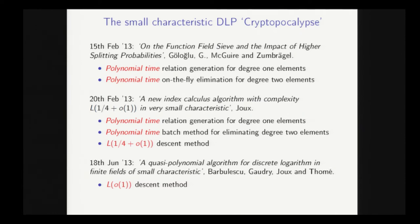And at around the same time, Antoine Joux was having very similar ideas. So he came up with a polynomial time relation generation method for degree 1 elements, which was different to ours but essentially isomorphic to it. And he also had a polynomial time method for eliminating degree 2 elements, which was in batches. But most importantly, he had a descent method for eliminating other small degree elements, which are the hardest part during the descent after degree 2. And with this, he was able to get a heuristic L1/4 algorithm. So that was a really big breakthrough.